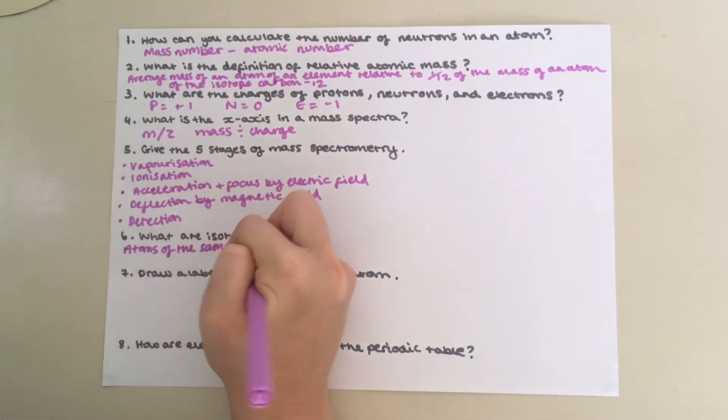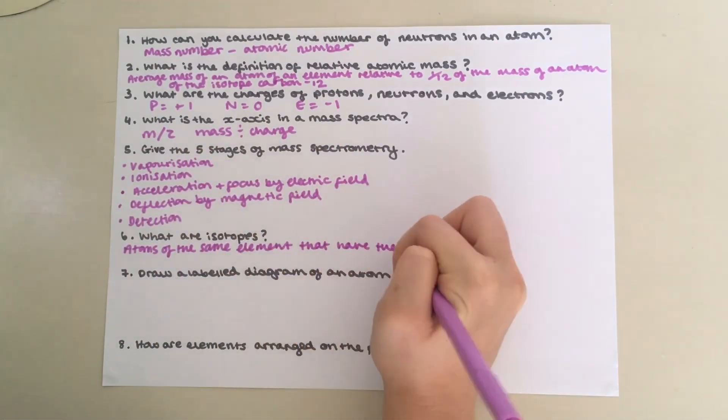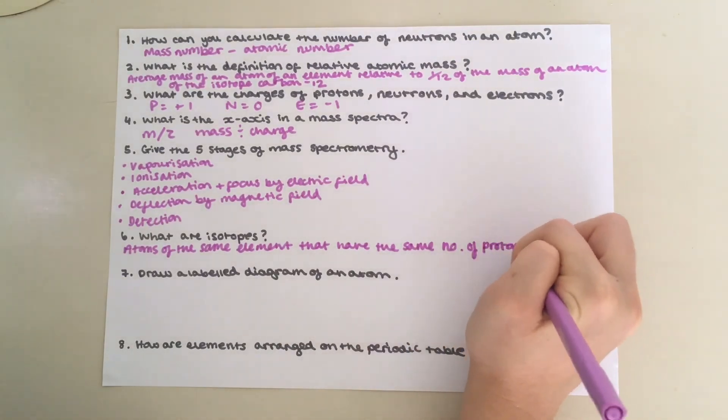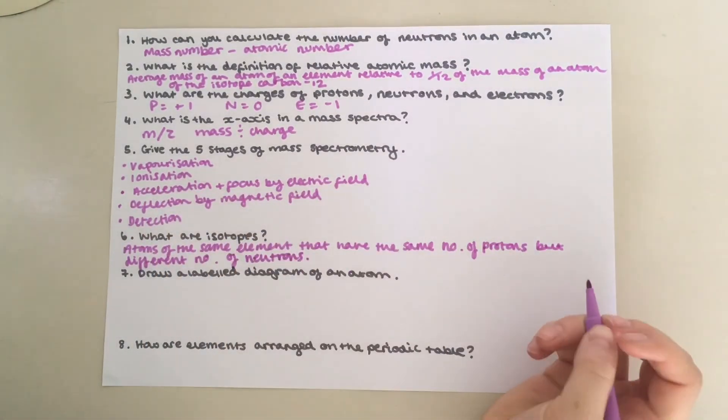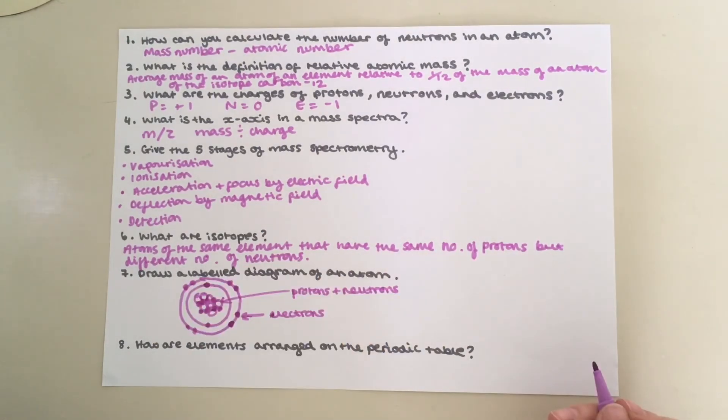Question 6: Isotopes are atoms of the same elements that have the same number of protons in the nucleus, but a different number of neutrons. For question 7, you should have drawn a labeled diagram of an atom which included protons and neutrons in the nucleus, and electrons in shells or energy levels surrounding the nucleus.